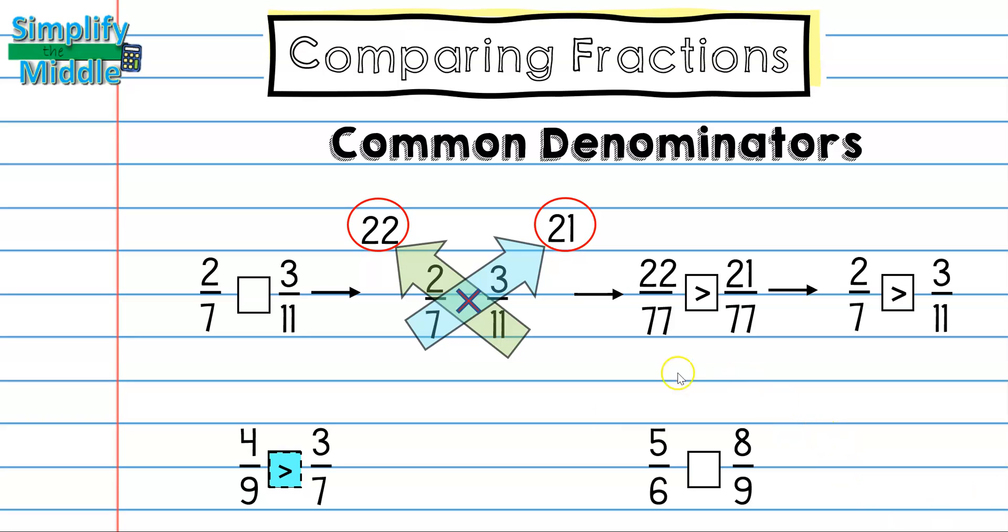So pause the video and see if you can try this one on your own. What you should have found is that 6 times 8 is 48, and 5 times 9 is 45. Because I know that 45 is smaller than 48, 5 sixths is less than 8 ninths.